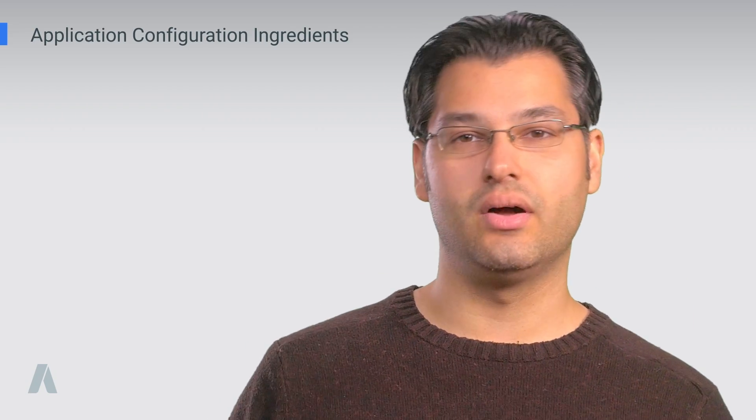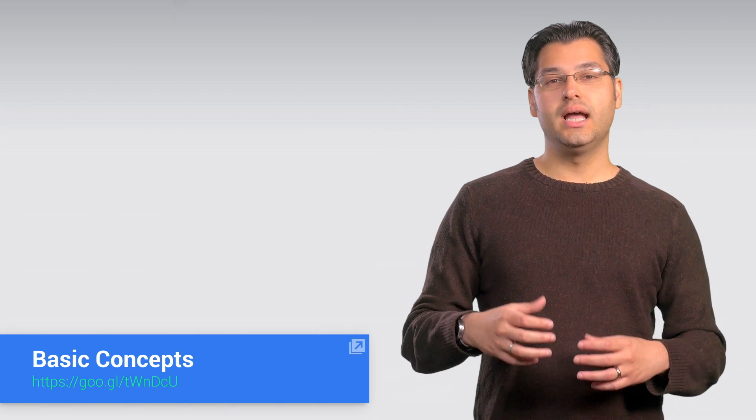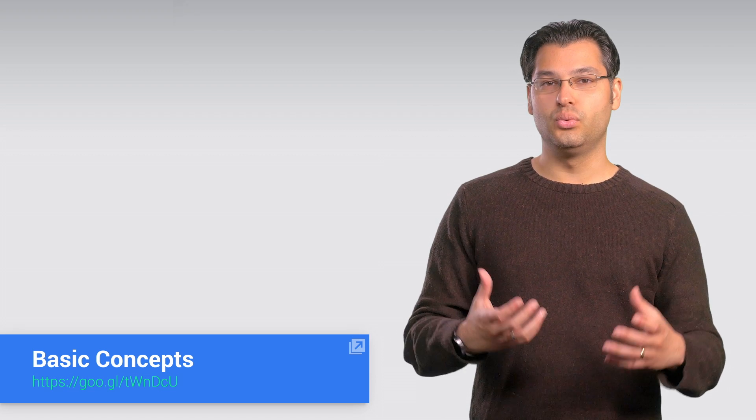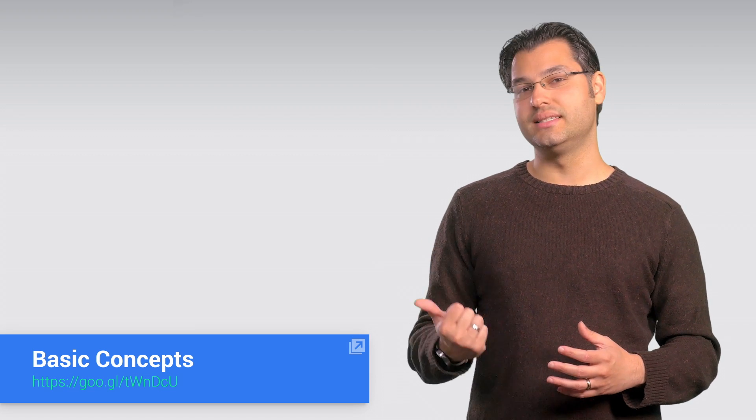Now, let's dig into the configuration ingredients of an API call. In this video series, we're using a client library to access the AdWords API. So we won't be going into the backend details of how API calls are made. But if you want to know more about SOAP, OAuth 2, and the other plumbing that makes these calls work, check out the basic concepts here.